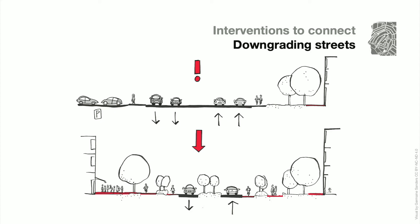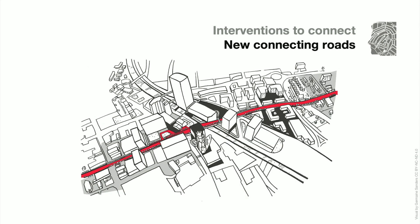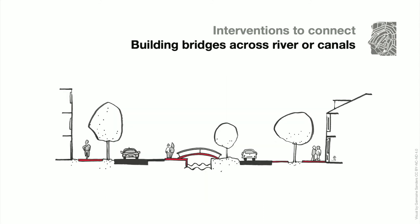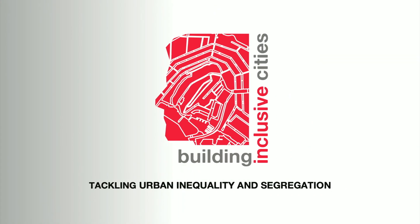Such interventions reduce the effect of the element as a border. Interventions could be, for example, to downgrade streets, transform a highway or car traffic-oriented street into a walkable street, establish new connecting main roads between districts, or build bridges across rivers and canals. This type of intervention is usually a major infrastructure change and thus requires longer-term planning and a related budget.